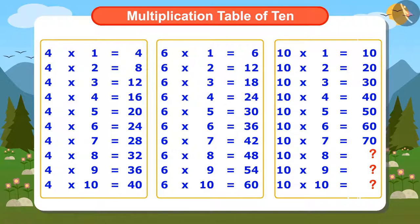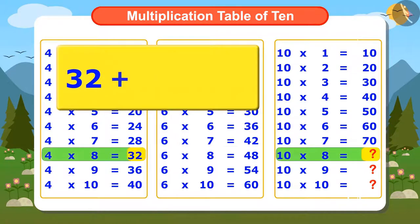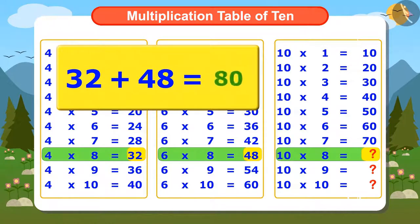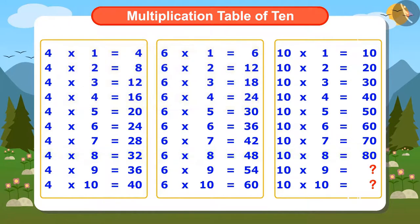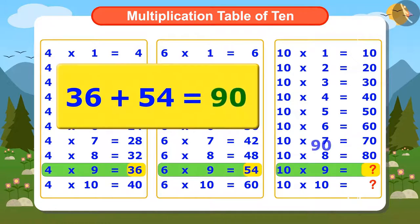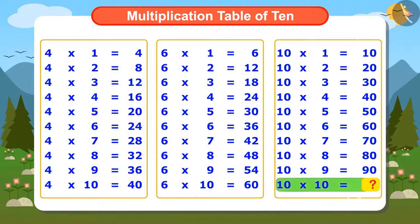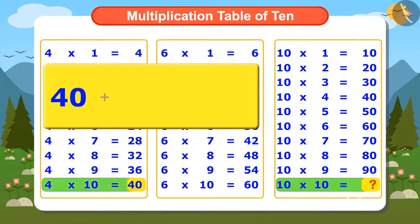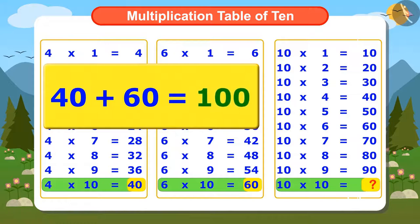Now only three numbers are left. To find the eighth number of the Multiplication Table of 10, we add 32 and 48 — the answer is 80. To find the ninth number, we add 36 and 54 — the answer is 90. And to find the tenth number, we add 40 and 60 — the answer is 100.